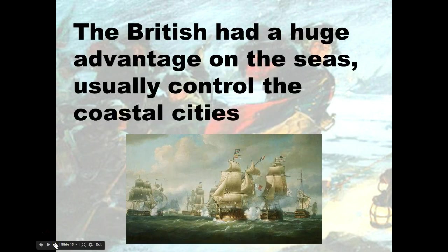One of the advantages that the British have over the colonists, especially at the beginning of the war, is that the British had a huge advantage on the seas. They had a navy — probably at that time period one of the most powerful navies in the world. When they brought their ships in next to a colonial city, many times they could control that city just from their navy. The colonists just don't have things ready to go once the war starts — they might have rifles used for shooting rabbits and squirrels, but they're not going to have cannons or artillery laying around. Same thing with the navy: it takes a long time to build up ships and a naval force.